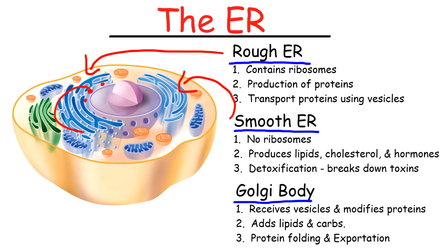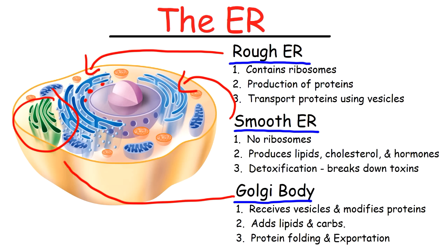Going back to the rough ER — once the ribosomes make the proteins, the proteins are enclosed in a vesicle, and those vesicles get transported to the Golgi body. The Golgi body receives the vesicles and modifies the proteins by adding lipids and carbs to them, and it can also fold the protein to give it the proper shape, because the function of a protein is dependent on its shape. Once it modifies and processes the proteins, it exports them out of the cell.